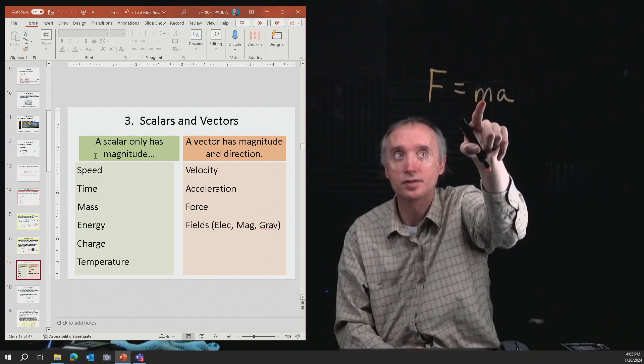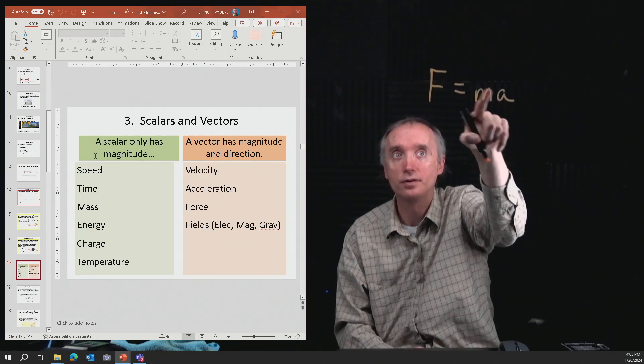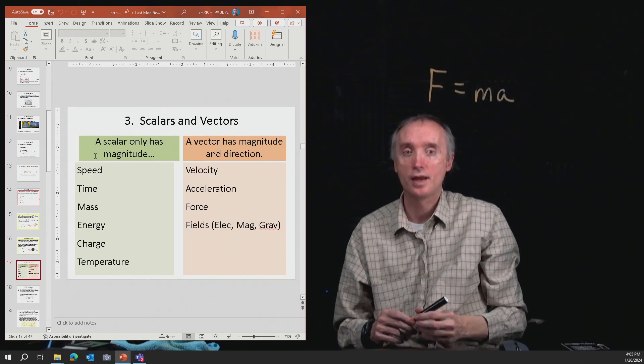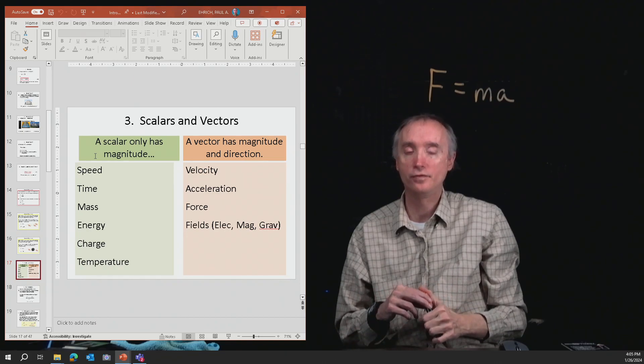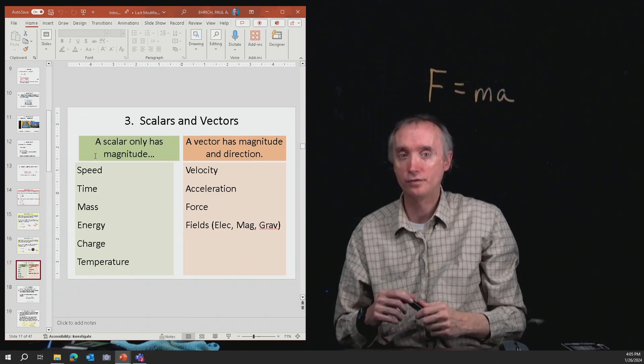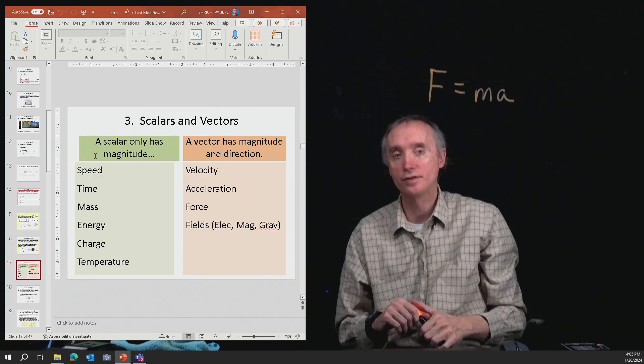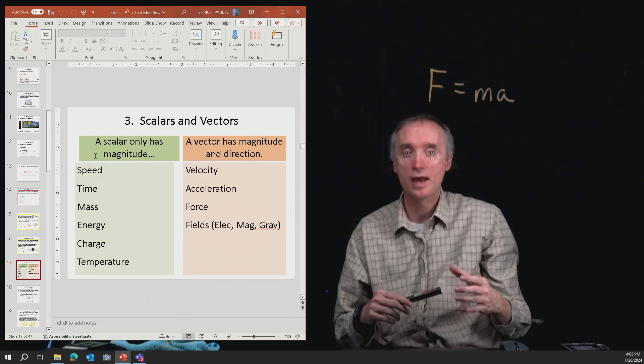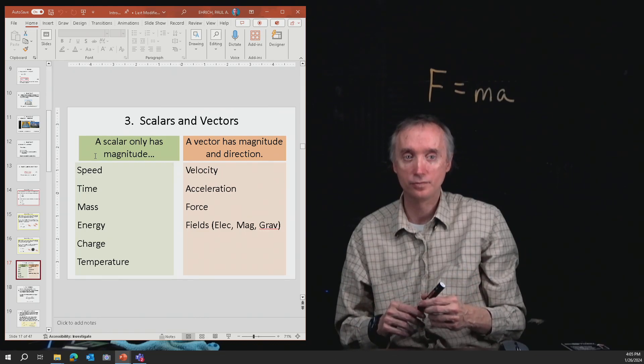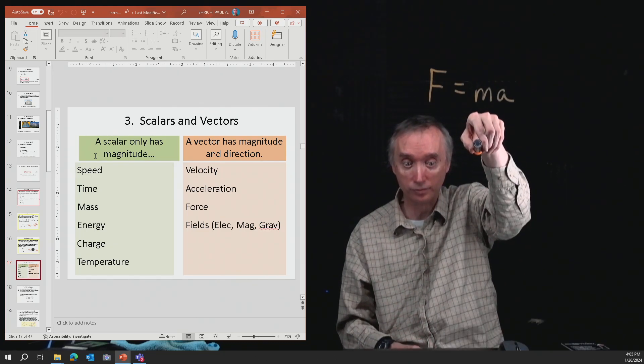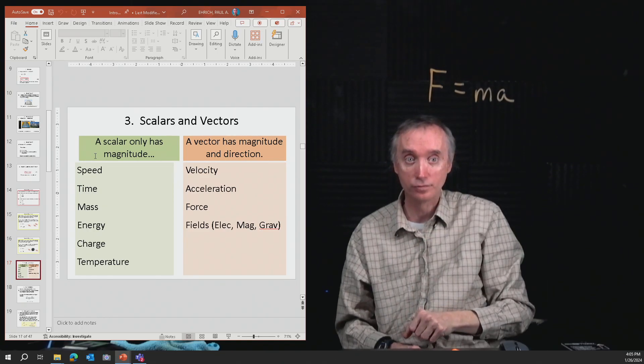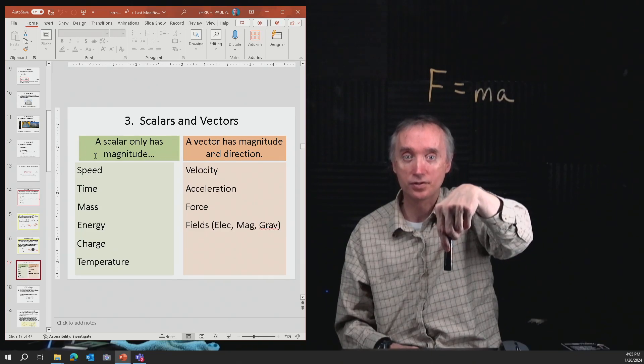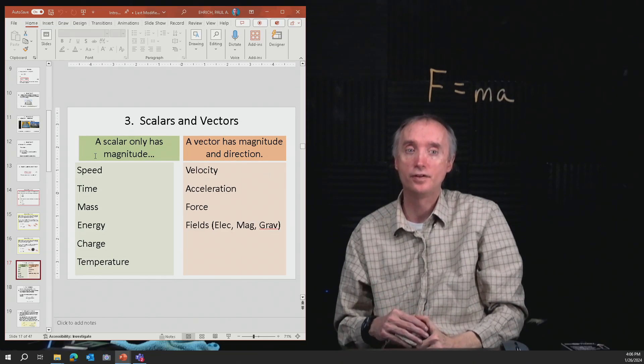So when you multiply a scalar times a vector, you get another vector. So force is also a vector. And then we've talked about fields in here. The electric field, the magnetic field, the gravitational field—all three of those things have a particular direction. So gravity in this room is down. It's a direction, so the gravitational field is a vector.